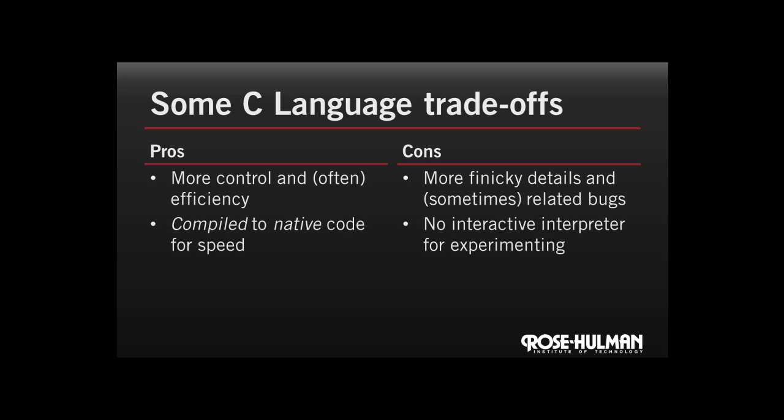Compiling a program means converting the whole program from the code that we write into something that the computer can execute. C code is usually compiled for a specific processor, which means it runs faster than a language like Python, but it will be less portable than Python or Java. On the other hand, compiling the program means that we can't type and run just one line at a time and see the result before writing the next line, like we did early on with Python.